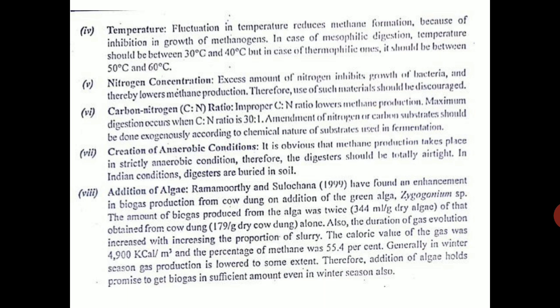That is why the Carbon-Nitrogen ratio is very important. Maximum digestion occurs when the C:N ratio is 30:1, meaning carbon should be 30 times and nitrogen very low — only one part. Carbon should be 30 times and nitrogen should be very low. Only then will gas formation take place. More nitrogen will reduce the growth of bacteria and thus reduce methane production.